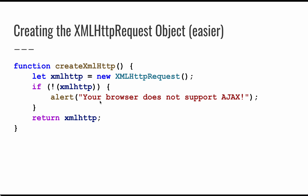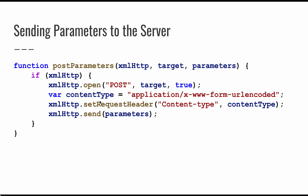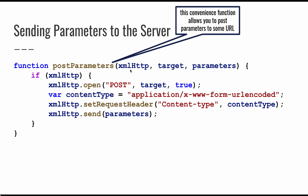Now we'll look at some helper functions we'll write — these are not built in, but they'll allow us to interact with the server much more directly and easily. One thing we want to do is send parameters and get a response. The `postParameters` function takes an XMLHttpRequest object, a target URL, and a string of parameters. The `open` method initiates a connection to the server with a POST request to the target URL.